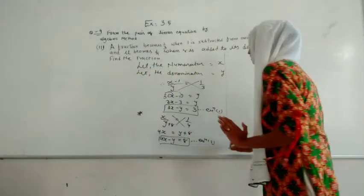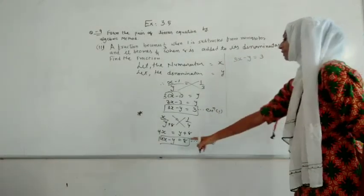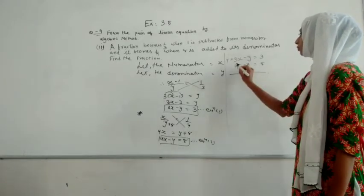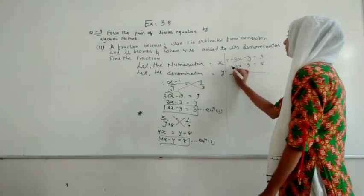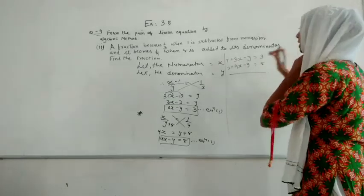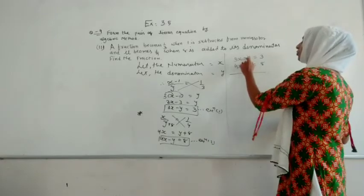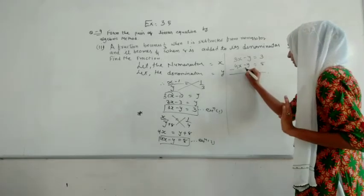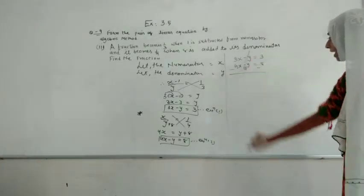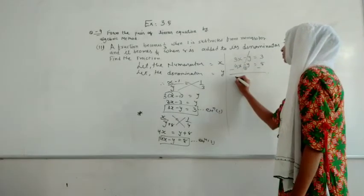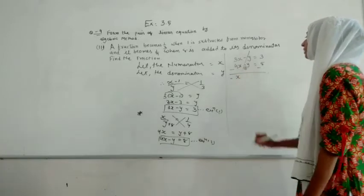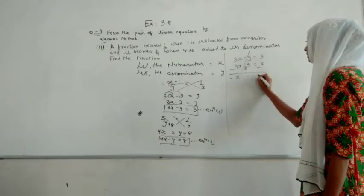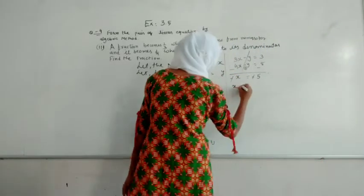Now solving by elimination method: equation 1 is 3X minus Y equals 3, and equation 2 is 4X minus Y equals 8. The coefficient of Y is the same, so we change the sign of one equation and subtract. Minus 4X plus 3X gives minus X, and minus 8 plus 3 gives minus 5. Since the sign of the greater number is minus, X equals 5.